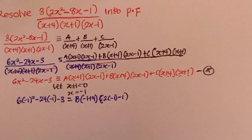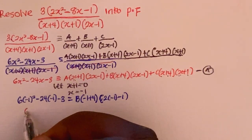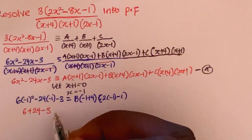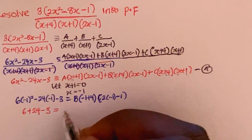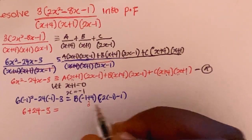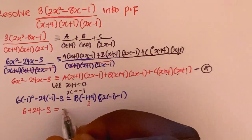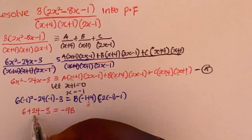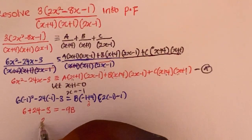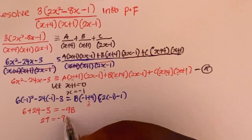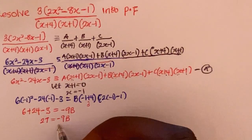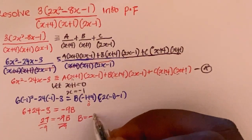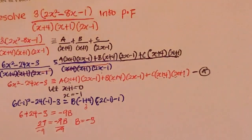Simplifying: 6 plus 24 minus 3 equals B(3)(-3). That gives 27 equals -9B. Dividing both sides by -9, I get B equals -3.